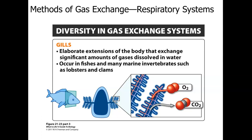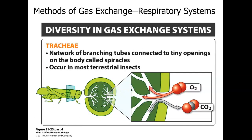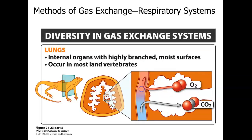In gills, oxygen separates from water and diffuses in, while carbon dioxide diffuses across and exits into the water. Terrestrial insects have a network of branching tubes connected to spiracles — tiny body openings — that allow oxygen in and carbon dioxide out. Most land vertebrates have lungs: internal organs with highly branched moist surfaces containing alveoli where oxygen diffuses into the bloodstream and carbon dioxide diffuses out.